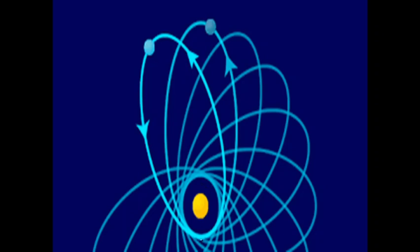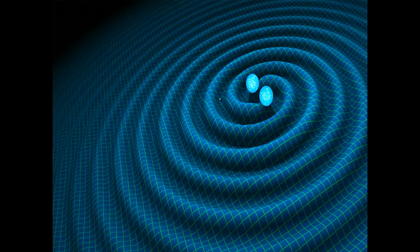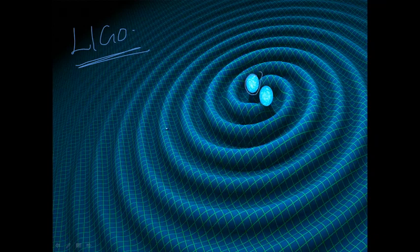The precession of the perihelion of Mercury around the Sun is another piece of evidence — the change in Mercury's orbit could be explained only using the equations set forward by Albert Einstein in the general theory of relativity. Additionally, the detection of gravitational waves was another important milestone. This happened recently with the detection of gravitational waves at the famous laboratory LIGO. Gravitational waves are waves propagating through the spacetime continuum.